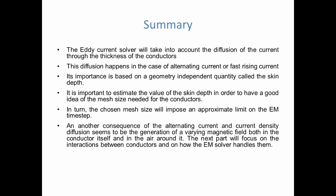And then finally, one thing that we saw is that this alternating current and this diffusion of the current density also generates a varying magnetic field, both in the conductor itself and in the air around it. And this is where it becomes important, because in the next part, in our next video, we're going to focus on the interaction between conductors and how the EM solver handles them.